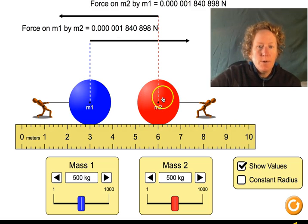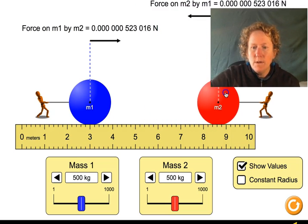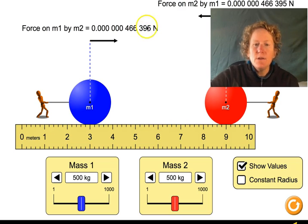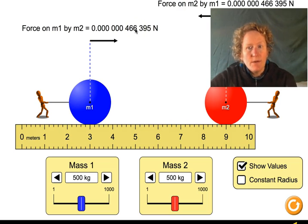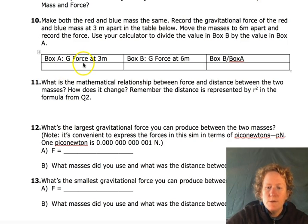Now we're going to pull them six meters apart, so I'll go one, two, three more meters, and now look at the force, put that in box B, and then use your calculator to divide them. I'm sure you have a calculator on your computer, or your cell phone, or somewhere in your house. So we recorded the force at three meters, remember the masses were the same, we recorded the force at six meters, and now it's your job to do that division. Box B, right here, this number, divided by box A.